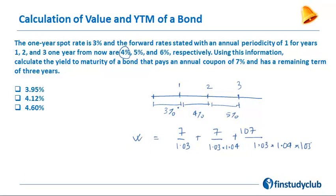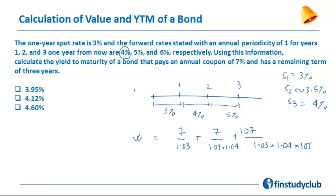Since we're on this question, we can quickly get a sense of the 2-year spot rate: 3% plus 4% divided by 2 gives approximately 3.5%. The 3-year spot rate is 3 + 4 + 5 = 12, divided by 3, giving 4%. So the 1-year spot rate is 3%, the 2-year spot rate is approximately 3.5%, and the 3-year spot rate is 4%.